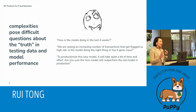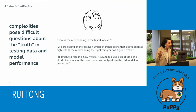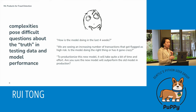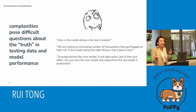All of these complexities interact with each other and pose difficult questions. When business asks me, 'How is the model doing in the last four weeks?' — I don't know. 'We're seeing an increasing number of transactions flagged as high risk — is the model going crazy?' — I have no idea. 'To productionize this new model will take time and effort — are you sure it will actually outperform the existing model?' — I can give you a guess of maybe, probably, but I can never guarantee that.